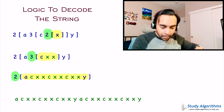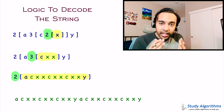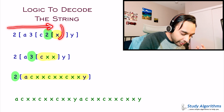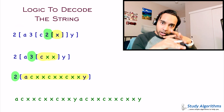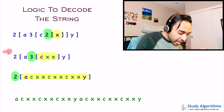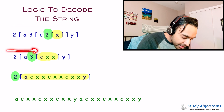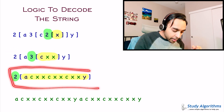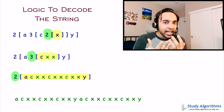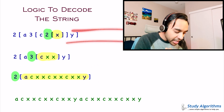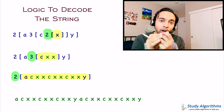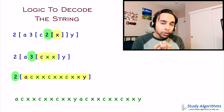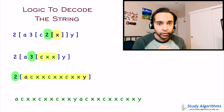If you try to approach the problem by iterating through the string, finding the innermost bracket, replacing it, then traversing again to find the next innermost bracket, this takes up a lot of time. If your string is very large, you will spend a lot of time just iterating through the string again and again. So we definitely need to find an optimal solution.